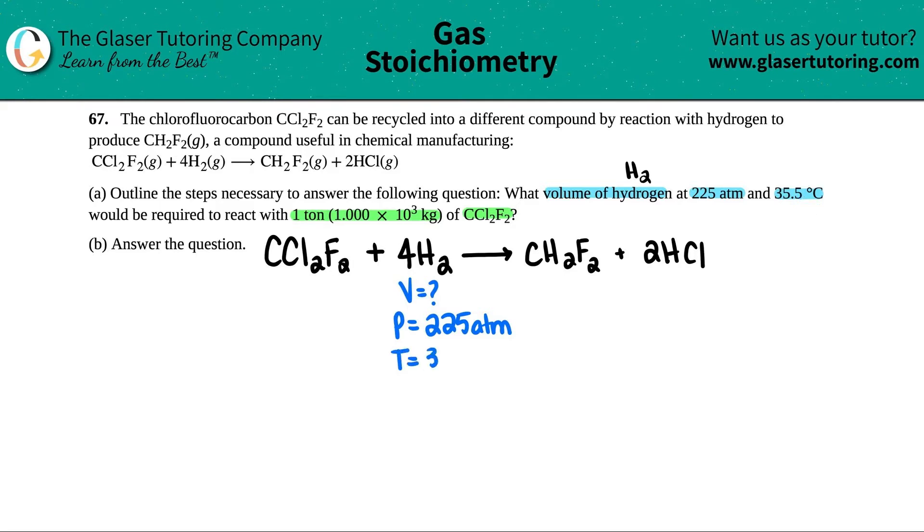Also this is at a certain temperature, degrees Celsius. So I have a T value, that's 35.5 degrees Celsius. And then they said this is going to be required to react with one ton, aka 1.000×10³ kilograms of CCl2F2, which is right here. So I know some information about this one. Usually we work in the metric unit, so who cares about that one ton. I'm just going to say this is 1.000×10³ kilograms.